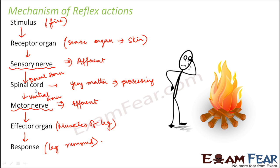Think of it this way: the brain is like the principal of a school. The principal knows all about what is happening inside the school. But for a particular class, you have a class teacher who takes care of all the needs of that class. If a small issue comes up within the class, they approach the class teacher first rather than wasting time reaching the principal. The class teacher gives them a solution and keeps the principal informed. Similarly, the spinal cord gives the response directly to save time, but the brain is kept informed about whatever is happening.